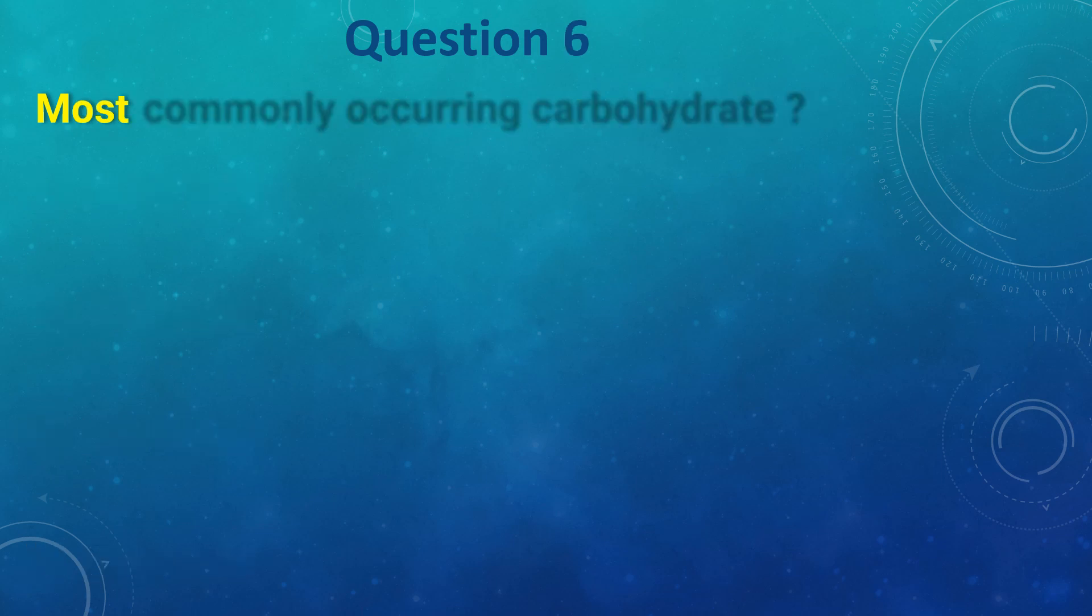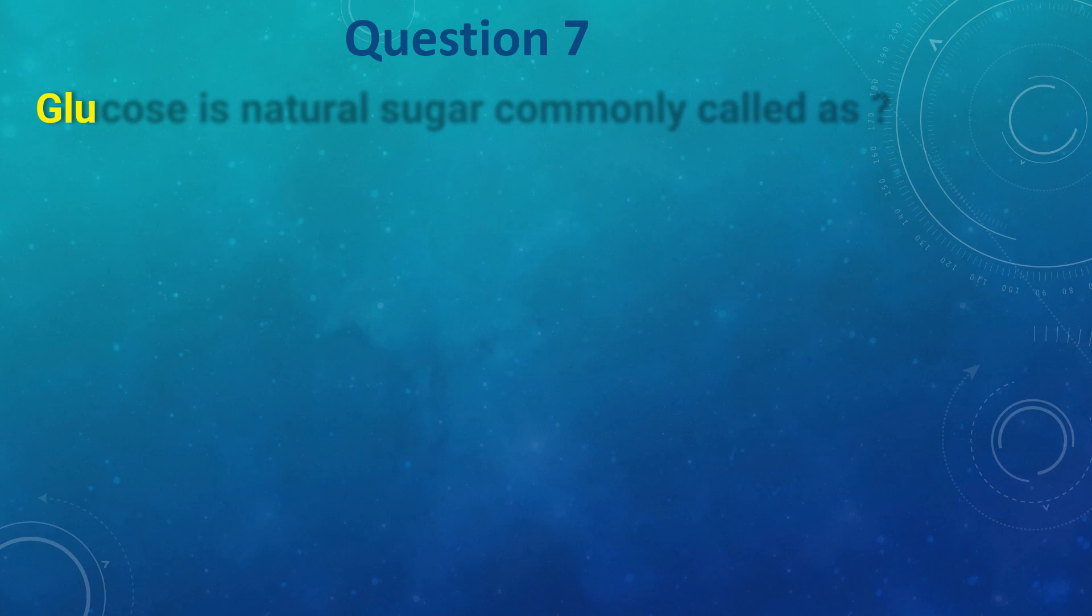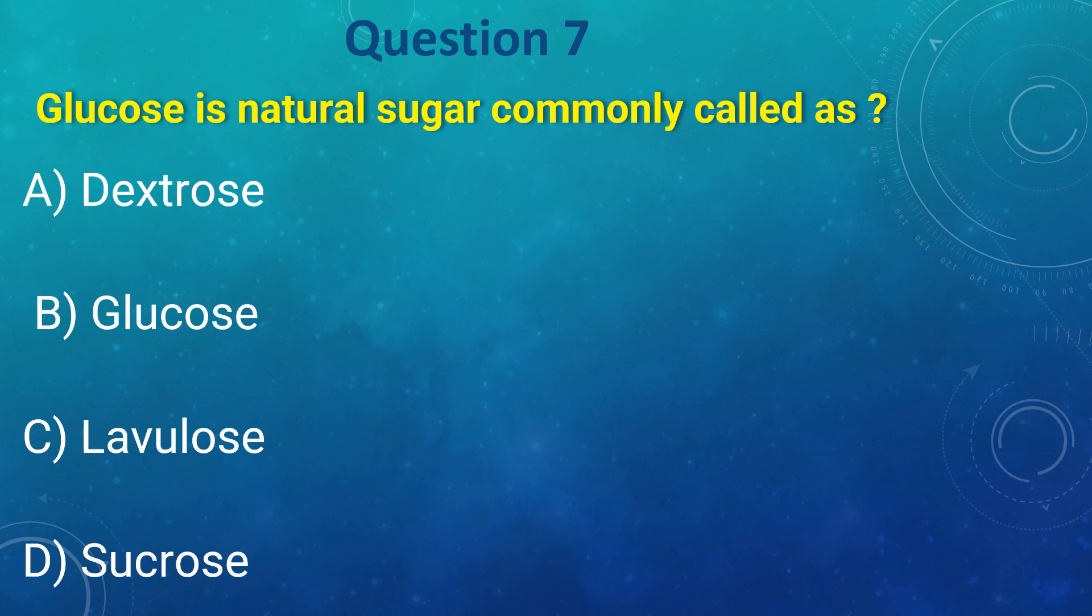Most common occurring carbohydrate is: a) dextrose, b) glucose, c) levulose, d) sucrose. The answer is glucose. Glucose is natural sugar commonly called as: a) dextrose, b) glucose, c) levulose, d) sucrose. The answer is dextrose.